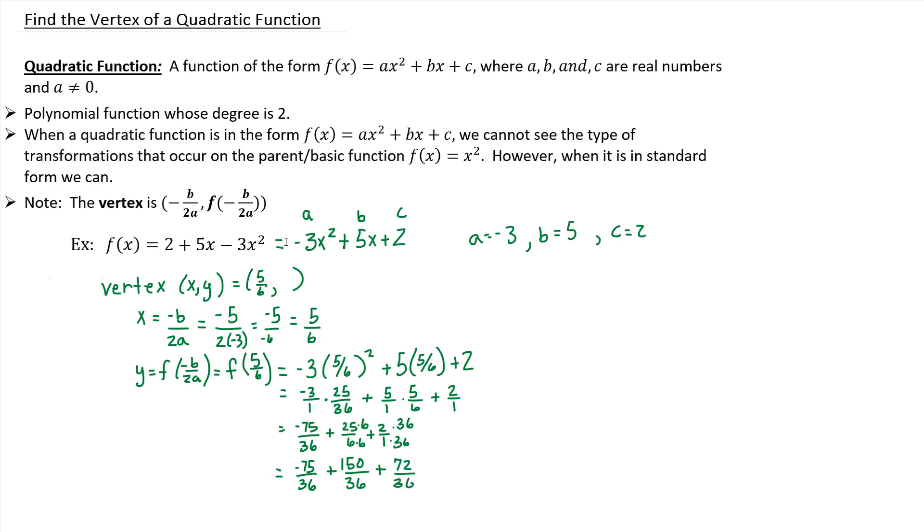If you add all of those up, you get 147 over 36. So that's the y value of your vertex. So 147 over 36, and you're done.